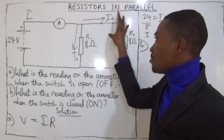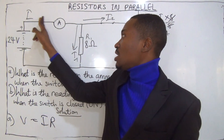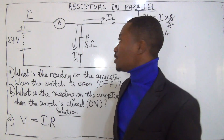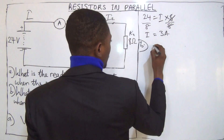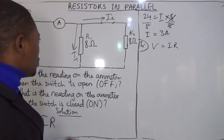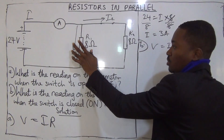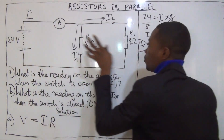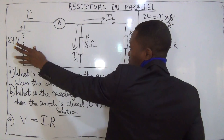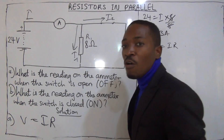When we find I1 and I2, then we add them together. That will give us I, which is what the ammeter will read. Take note that these 24 volts is what R1 will see. This same 24 volts is what R2 will see. The voltage across R1 is 24 volts, and the voltage across R2 is 24 volts.